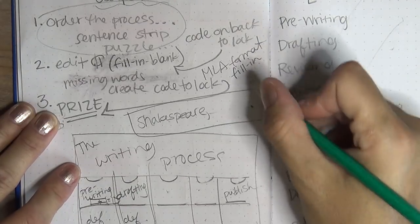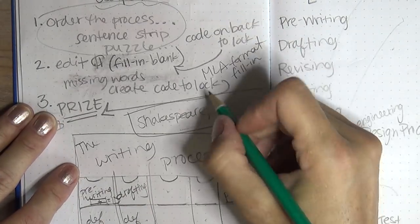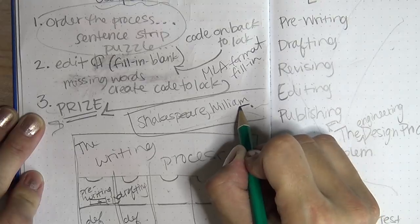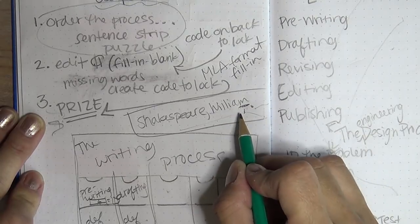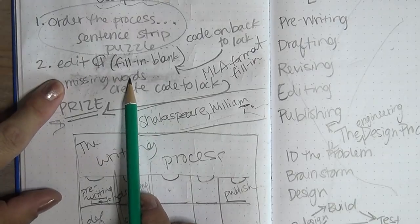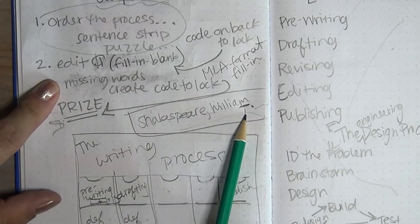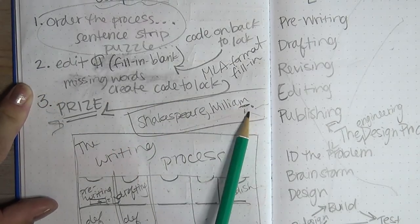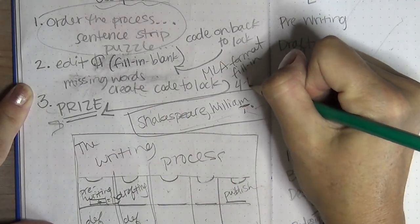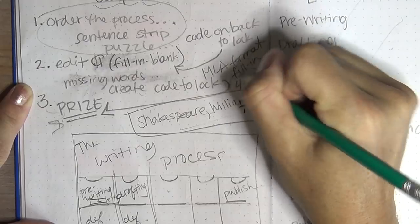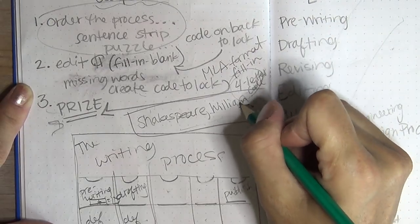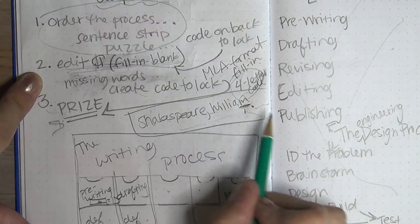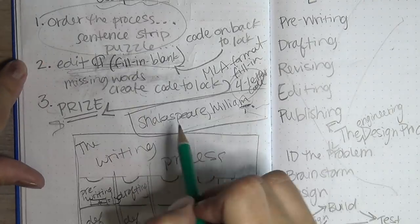But then there will be certain letters within the blank. So let's say, it'll be like Shakespeare, comma, blank. And then whatever the rest of the citation is. They would have to fill in William. And then let's pretend that M is the first letter in this lock. So this next lock for this puzzle to unlock the prize is going to be a letter code. I think the lock that I found is a four letter code. So they'll have to fill in these blanks. Maybe I'll do a crossword puzzle. I think that's better than editing. They'll have to figure out and answer things about the writing process and all sorts of stuff.